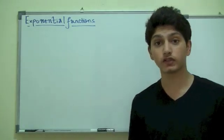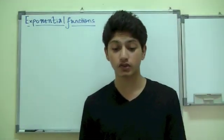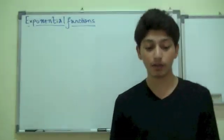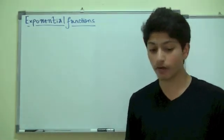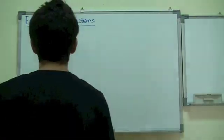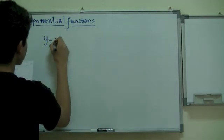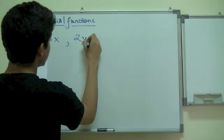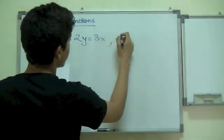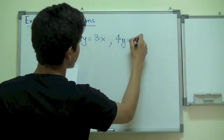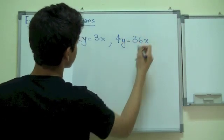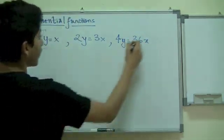Now, exponential functions, if you guys don't know, have characteristics that are variabilized in their exponent. The variables like we have all seen y equals x, then 2y is equal to 3x and 4y is equal to 36x, something along those lines.